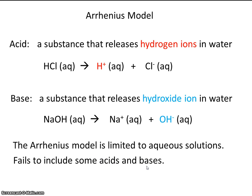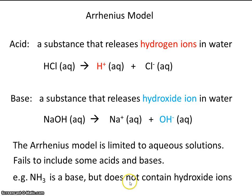For instance, do you remember the name of this? This is ammonia, and you know that ammonia is a base. However, it does not contain hydroxide ions — you don't see any OHs in ammonia — and yet it's still a base. So what was needed was another definition of acids and bases, one that was broader and more inclusive. That's the Bronsted and Lowry model.